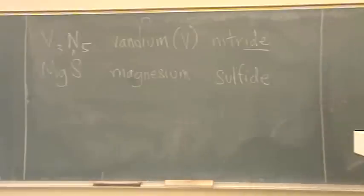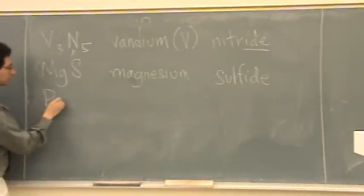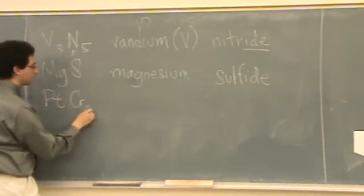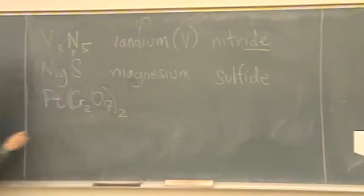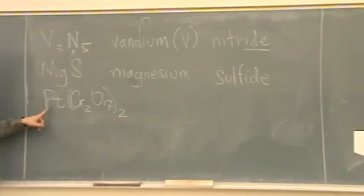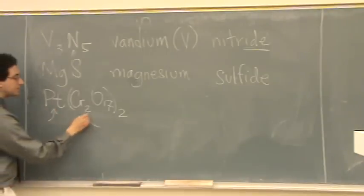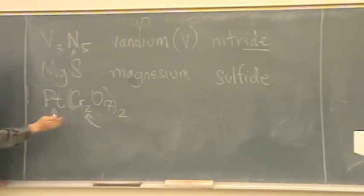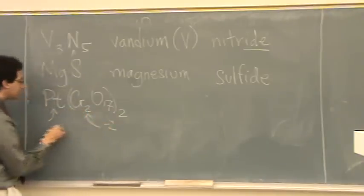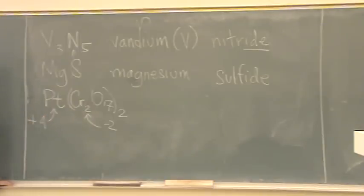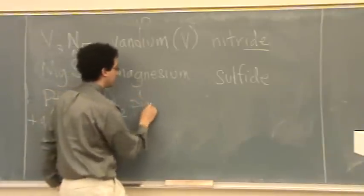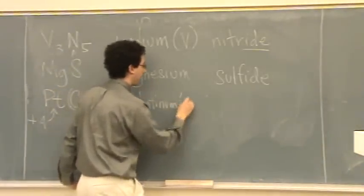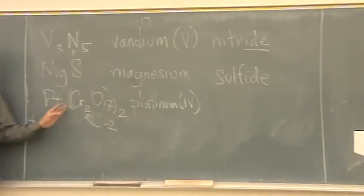Okay. Let's try another one. Pt(Cr2O7)2. So, what's the charge on platinum here? Maybe easier. What's this? What's its name first, the Cr2O7? Dichromate. Dichromate, so its charge is? Minus two, so this has to be? Plus four. Okay. So, we have platinum four. Platinum four, the last name would just be as-is, dichromate. No change.